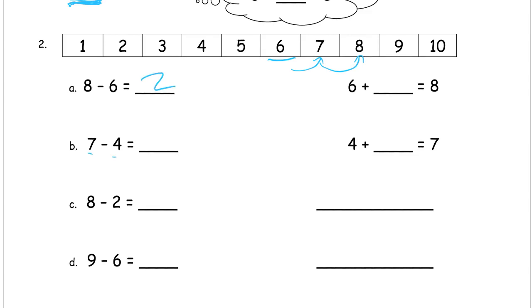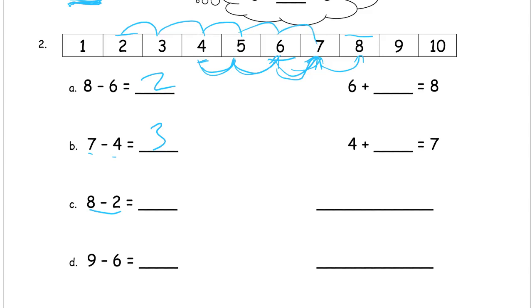Seven minus four. So if we count up from the four to the seven, start at the four: one, two, three — we had to count up three. Show this on the number line — draw those little hoppy arrows to show how you did it. Eight minus two: we're going to start at the two and count up all the way to the eight and see how many it took. That's one, two, three, four, five, six — there are six apart from each other.